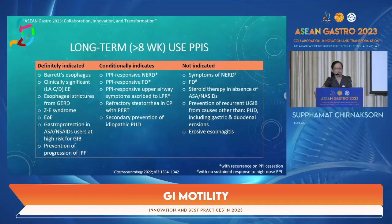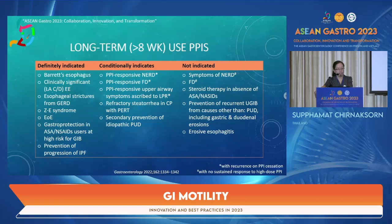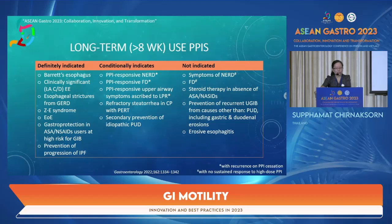For long-term PPI use (more than 8 weeks), definite indications include Barrett's esophagus, clinically significant erosive esophagitis LA grade C or D, peptic stricture from GERD, Zollinger-Ellison syndrome, eosinophilic esophagitis, gastric protection in patients taking aspirin or NSAIDs at high risk of GI bleeding, and prevention of idiopathic pulmonary fibrosis progression. PPIs are not indicated in functional dyspepsia with no response to high-dose PPI, patients on anticoagulants alone without aspirin or NSAIDs, or non-peptic ulcer upper GI bleeding.